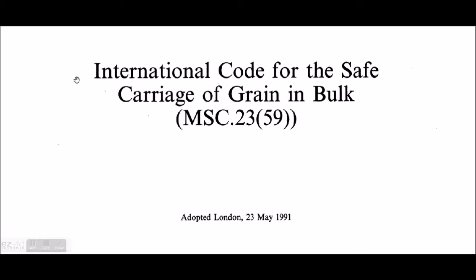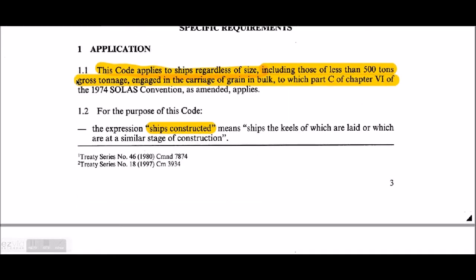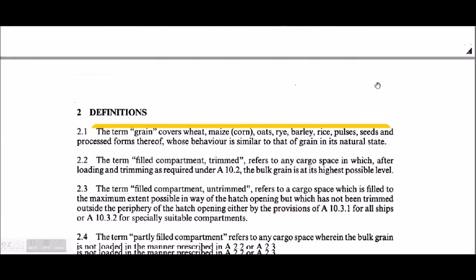This is the International Code for Safe Carriage of Grain — the Grain Code. The application of this code applies to ships regardless of size, including those less than 500 gross tons, engaged in carriage of grain in bulk, to which Part C of Chapter 6 of the SOLAS Convention as amended applies.